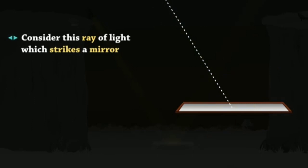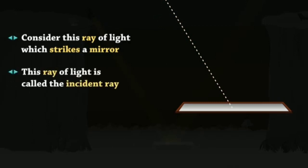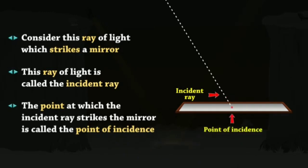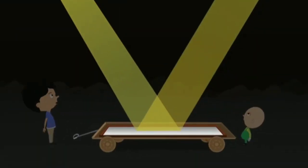Consider this ray of light which strikes a mirror. The ray falling on the mirror is called the incident ray. The point at which the incident ray strikes the mirror is called the point of incidence.